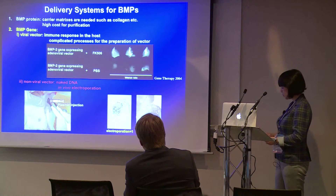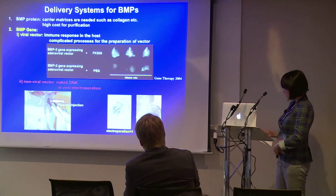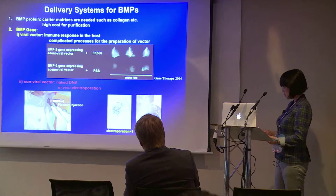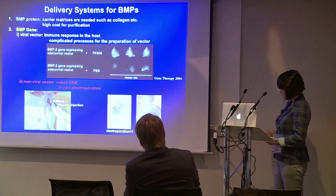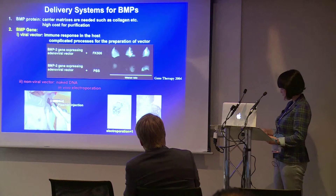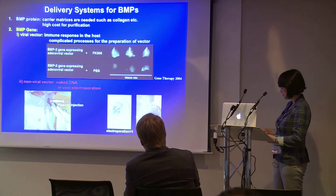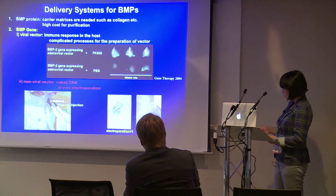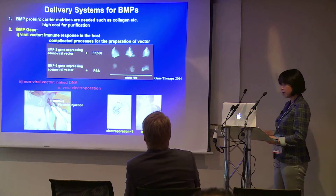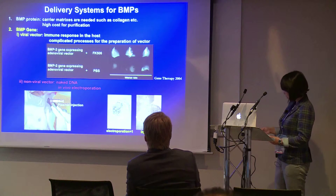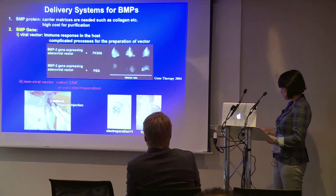Many researchers use recombinant human BMP protein, but BMP protein is soluble and disperses soon after implantation. A delivery system to retain BMP protein at the target site is necessary. Previous studies using the protein have required carrier matrices, and moreover it is very expensive to purify BMP protein for human use. Next, we tried to deliver the BMP gene to the target site using an adenoviral vector.